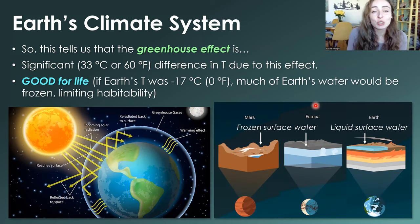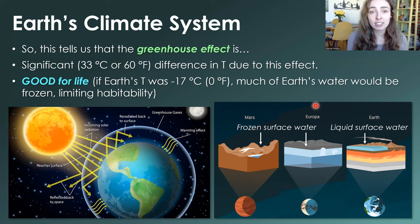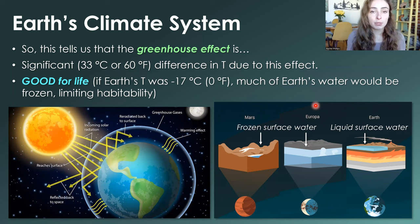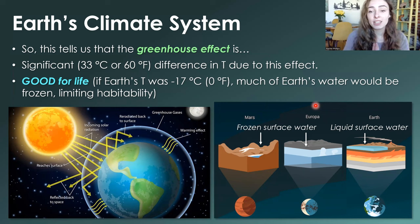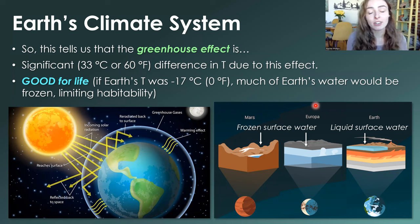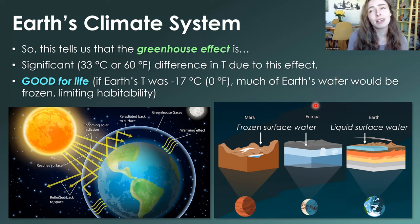Despite the negative connotations surrounding the greenhouse effect currently, it is actually really important — it is essential for life on Earth. If Earth did not have its greenhouse effect, it would be closer to negative 17 degrees Celsius, which would mean that Earth's water would not be liquid at the surface — it would be frozen — limiting or potentially wiping out any possibility of habitability. It would probably support only small microbial life rather than large multicellular or intelligent life.